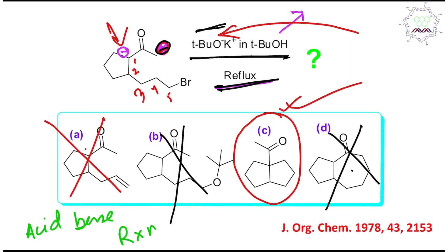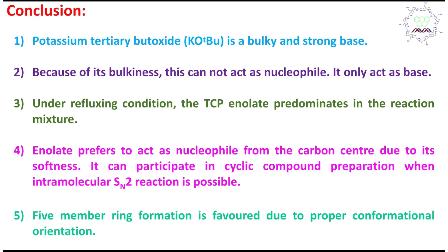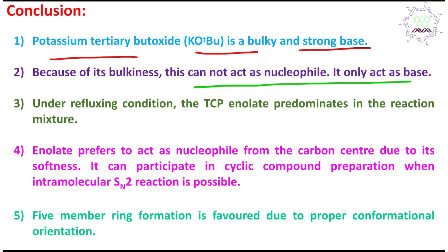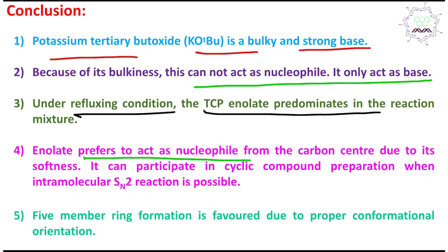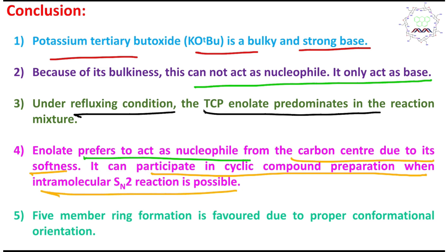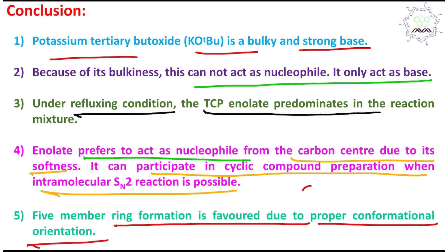If you understand the basic properties of this bulky base — tertiary butoxide — you can arrive at the right answer in less than 30 seconds. In conclusion: potassium tertiary butoxide is a very bulky, selective, and strong base. Due to its bulkiness it cannot act as a nucleophile and only acts as a base. Under refluxing conditions, the TCP — more substituted enolate — is generated. This enolate acts as a nucleophile from the carbon center, because carbon is softer in nature, enabling participation in cyclic compound preparation via intramolecular SN2-type reaction.